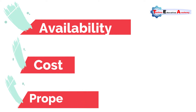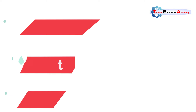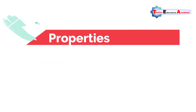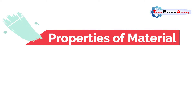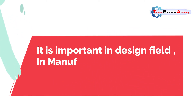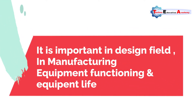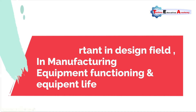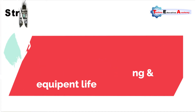These are the important considerations whenever we select materials. Various characteristics of materials which describe their behavior under different working conditions are known as properties of material. The study of properties of material is important because design, manufacturing, equipment functioning, equipment life, and factor of safety are all dependent on properties of materials. Now we will discuss important properties of material one by one.